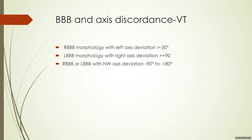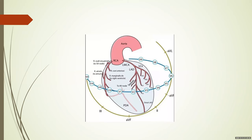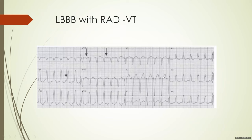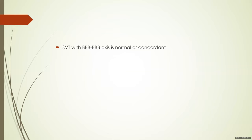Bundle branch block with axis discordance indicates VT. An RBBB morphology with left axis deviation — leads I and aVL become positive and II, III, aVF predominantly negative — is adjusted for VT. This is an RBBB morphology, not a true RBBB. Similarly, LBBB morphology with right axis deviation — leads I and aVL become negative and II, III become positive, indicating the axis has shifted toward inferior leads — is also suggestive of VT. In SVT with pre-existing BBB, the axis is usually normal or concordant.